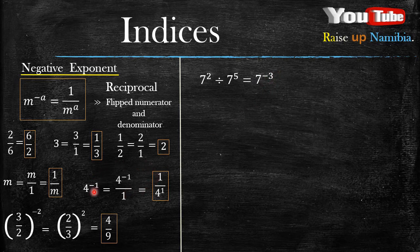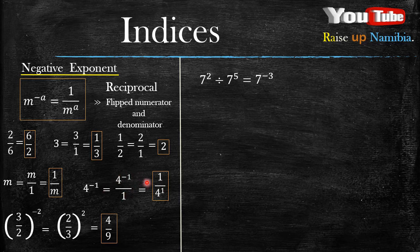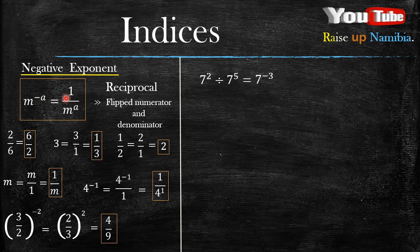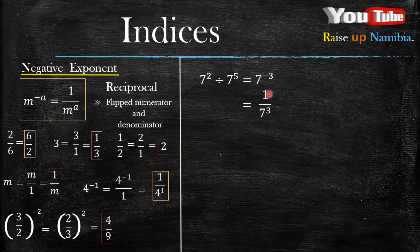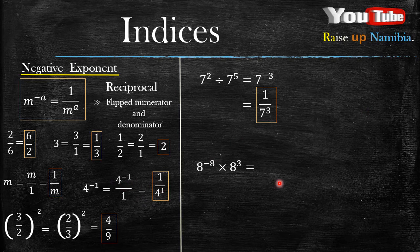So, what do we do to the 7 raised to the power negative 3? We do what we did here. So, you know what we did here is actually the law. So, if you follow this law, this will become this answer.